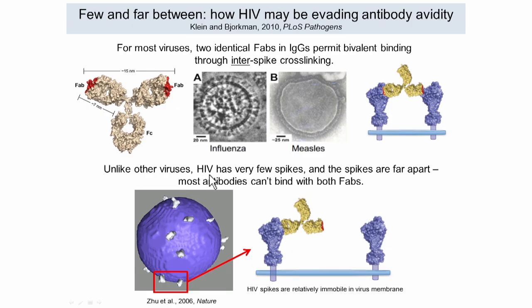Now look at HIV — it has hardly any spikes on its surface. It's about the same diameter as flu, around 100 to 150 nanometers. Flu has about 450 envelope spikes, but HIV has an average of 14, and these are on average spaced fairly far apart. This is from electron tomography studies by Kenneth Roux, and Sri Ram Subramaniam did similar studies as well. Basically, there aren't very many spikes and they're fairly far apart.